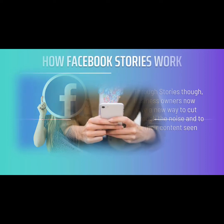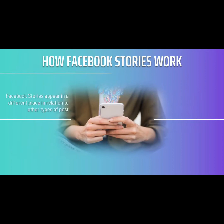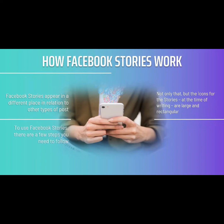How Facebook stories work: Facebook stories appear in a different place in relation to other types of posts. While images and updates appear on users' feeds, stories appear right at the top of the app — meaning stories are actually the first things users see when they open Facebook. The icons for stories, at the time of writing, are large and rectangular, ideal for consuming on mobile, and take up a large amount of space. This makes them very difficult for a user to miss — this really is prime real estate for internet marketers.